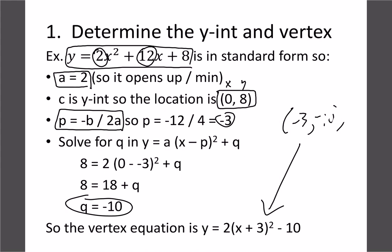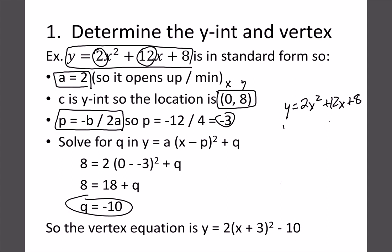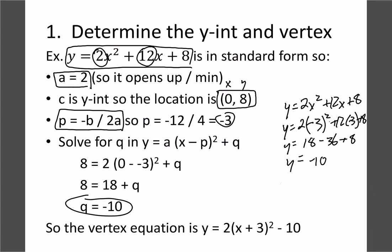The other option is to plug p into the original equation, since p is the x-coordinate of the vertex. So we compute 2 times negative 3 squared plus 12 times negative 3 plus 8: that's 18 minus 36 plus 8, which gives 26 minus 36, equaling negative 10. Either way you substitute, you get the same q value of negative 10, and then you can write the equation either way.